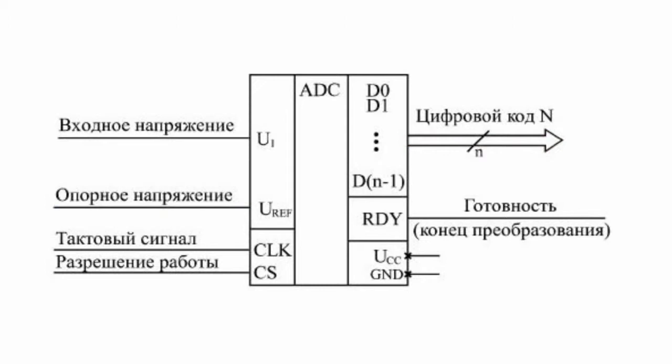The reference voltage of the ADC sets the input voltage range for conversion. It may be permanent or allow change within certain limits. Sometimes two reference voltages with different signs are provided to be fed to the ADC, so that the ADC can operate with both positive and negative input voltages.